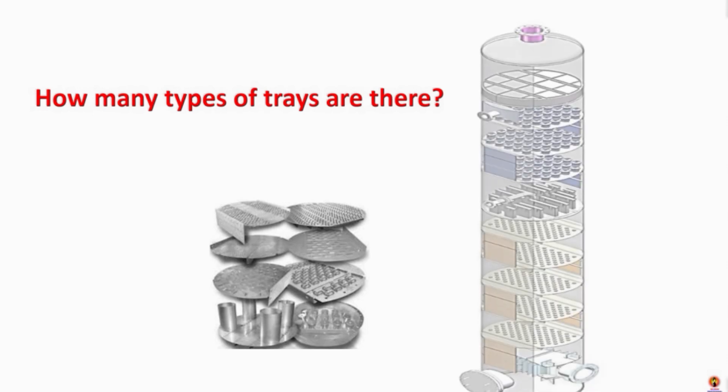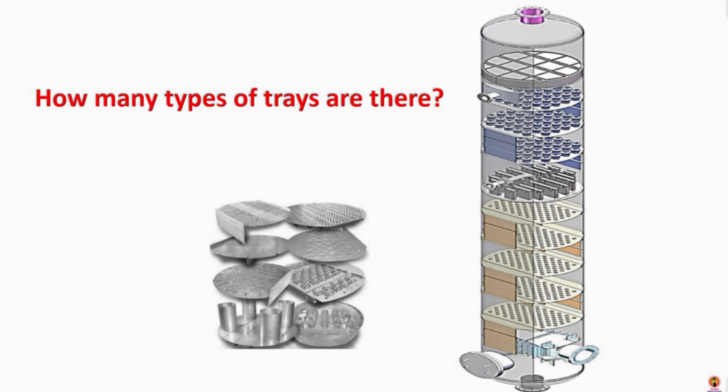How many types of trays are there? There are five major types of tray columns: bubble cap tray, sieve deck tray, dual flow tray, valve tray, and baffle tray.